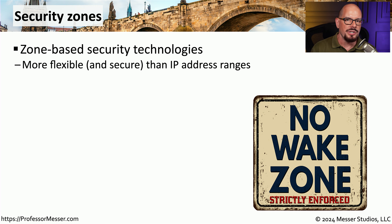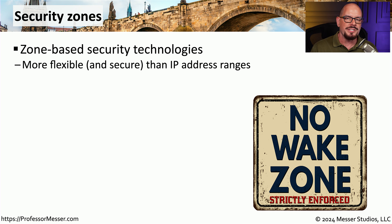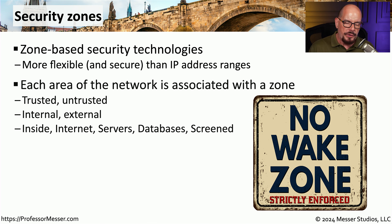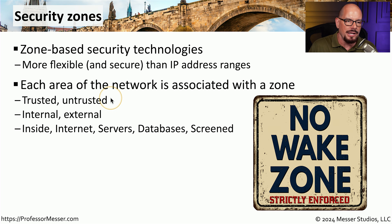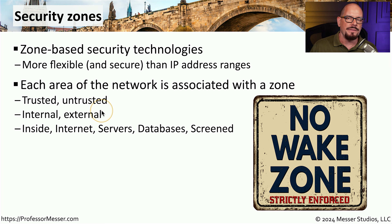On the firewall console we saw earlier, you might have noticed that there were zones referenced as part of the firewall rule. These zones can be used to create very broad references inside of our firewall rules. Instead of using an IP address range, you can simply use a security zone. You would first need to separate the network into different zones — there might be a trusted zone and an untrusted zone, or an internal zone and an external zone.